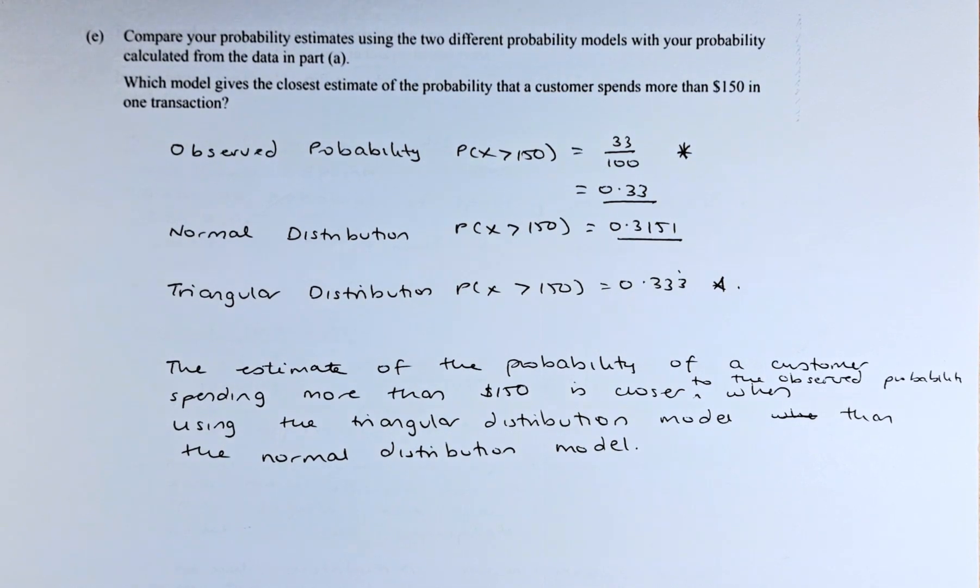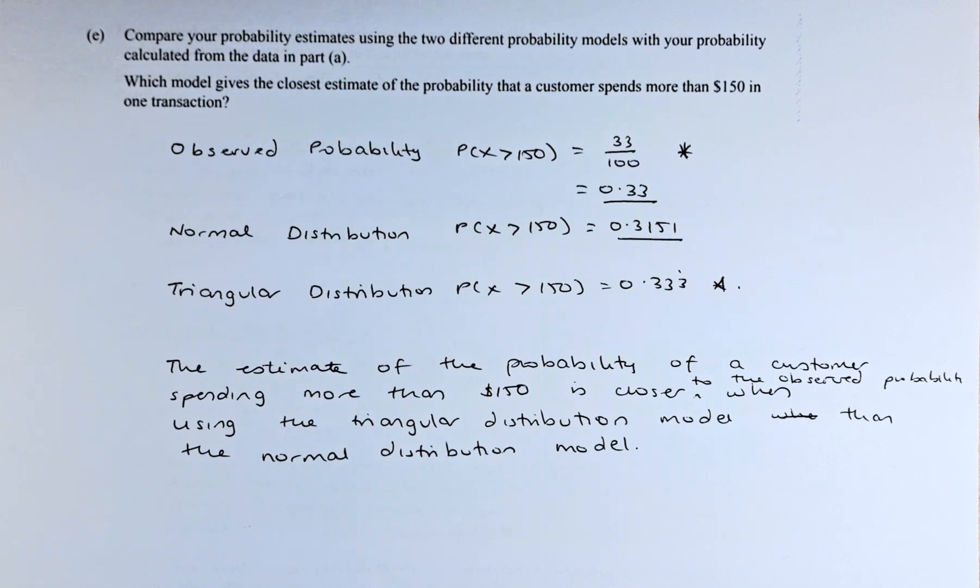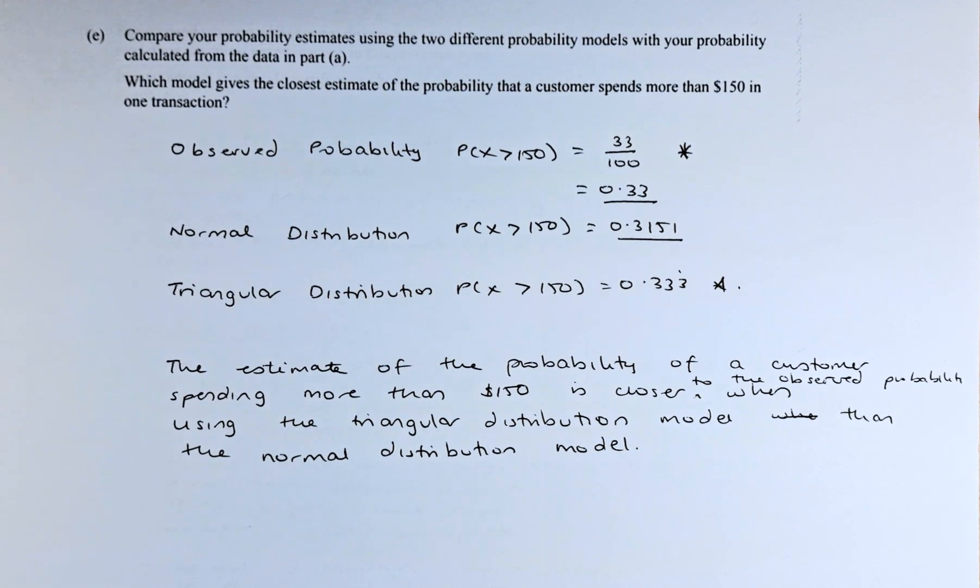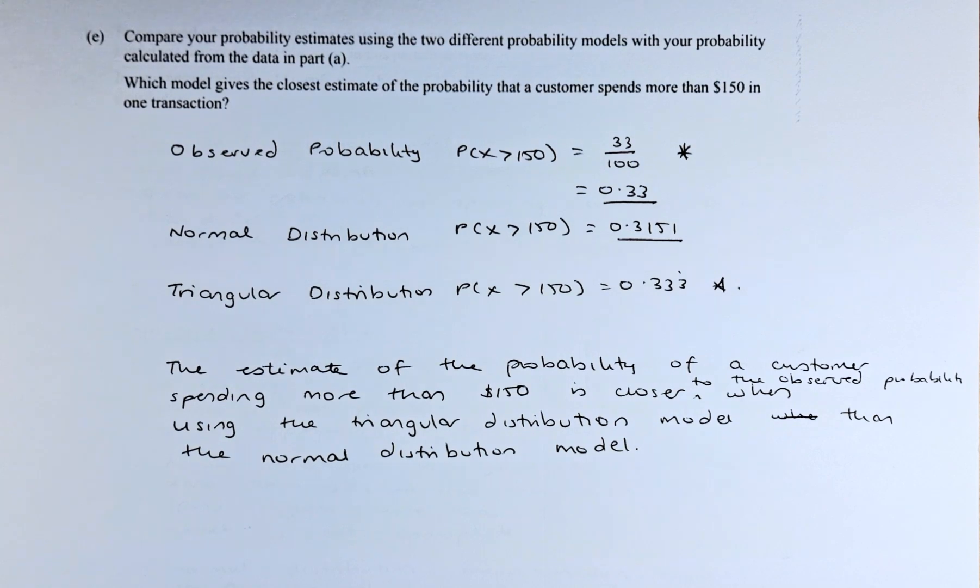Compare your probability estimate using two different probability models with your probability calculated from part A. Which model gives the closest estimate of the probability that the customer spend more than $150 in one transaction.